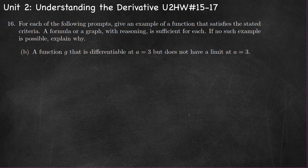Part B, we want a function g that is differentiable at a equals three, but does not have a limit at a equals three. If it's differentiable at that point, then it must be continuous at that point. And if it's continuous, it must have a limit. But we're told it does not have a limit — if it does not have a limit, then it's not continuous, and if it's not continuous, then it's not differentiable. So this is an impossible situation — not possible.